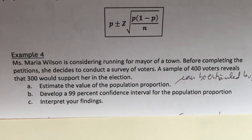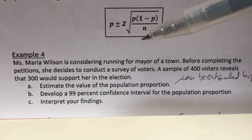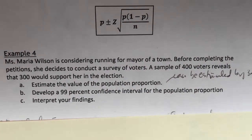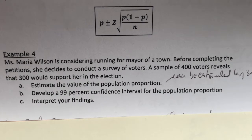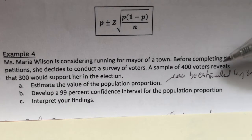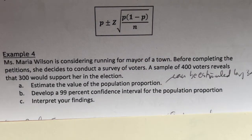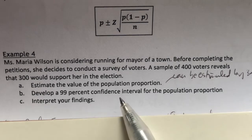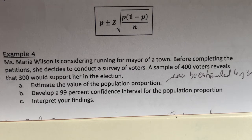Let's take a look at this example. Ms. Maria Wilson is considering to run for mayor in a town. Before completing the petitions, she decides to conduct a survey of voters. A sample of 400 voters revealed that 300 would support her in the election. Part A: Estimate the value of the population proportion. We do not know what the population proportion is, that is why we need to construct the confidence interval.